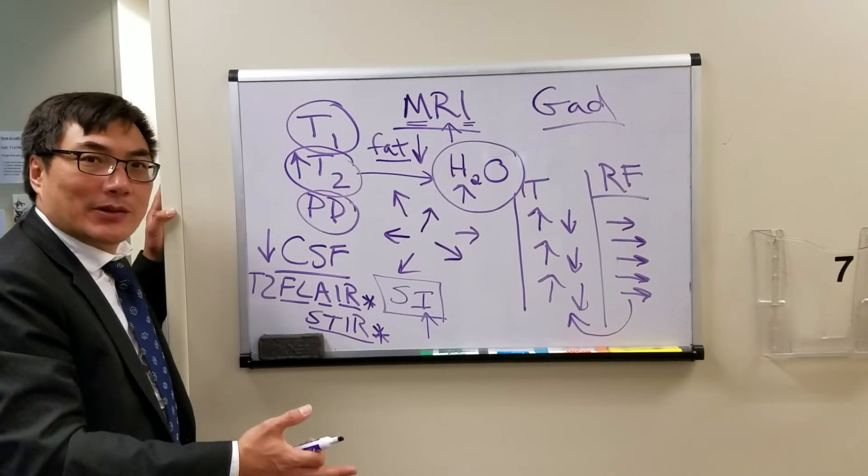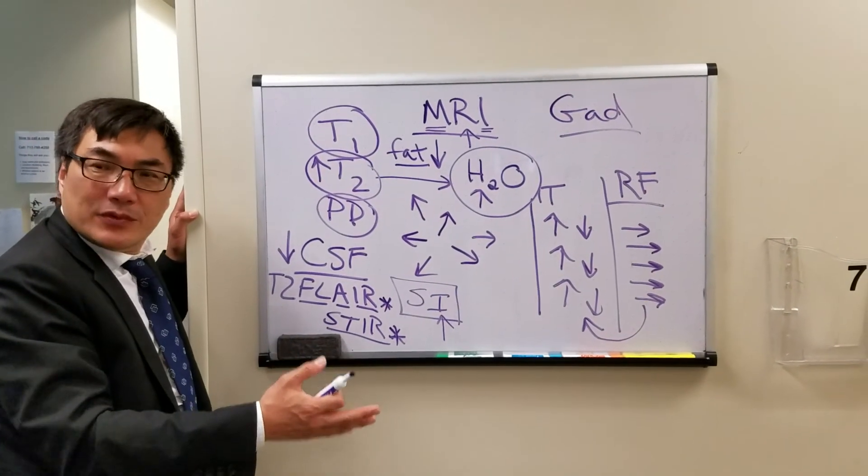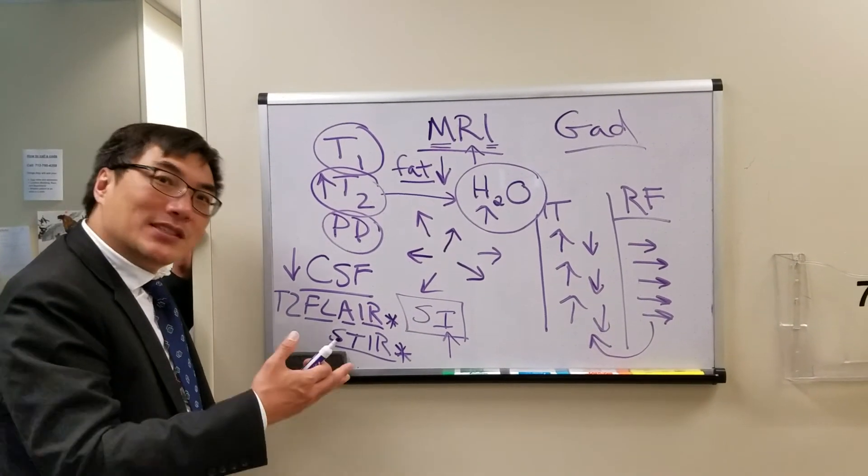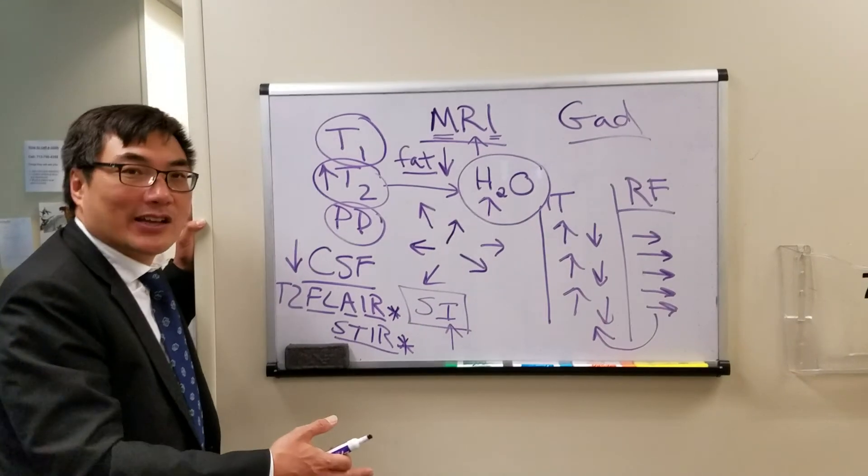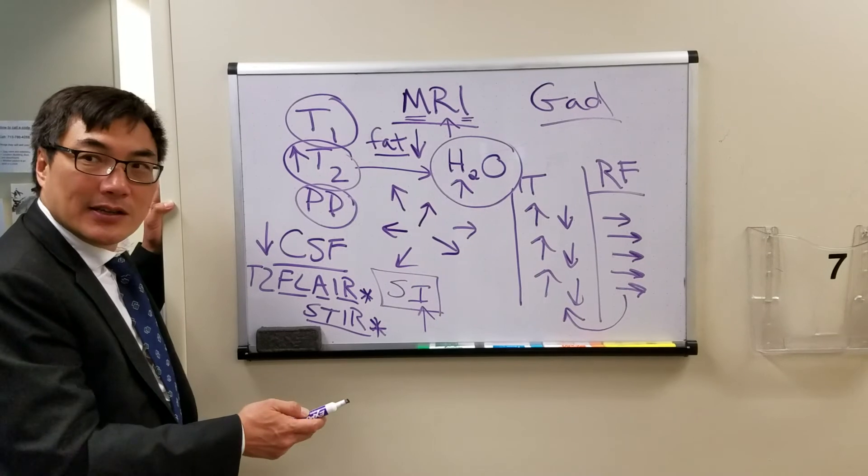So some normal structures in the orbit which do not have a blood-brain barrier, like the extraocular muscles, will enhance. The choroid will enhance. But the optic nerve, which is central nervous system, does have a blood-brain barrier and therefore will not enhance under normal conditions.